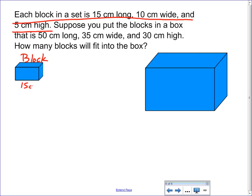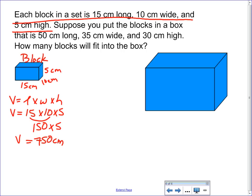We know it's 15 centimeters long, 10 centimeters wide, and 5 centimeters high. So let's find the volume of one block. Volume equals length times width times height. So the volume of one block will be 15 times 10 times 5. 15 times 10 is 150 times 5. Our volume of one block is 750 centimeters what? Cubed, right, because we're length times width times height. So let's continue forward then.